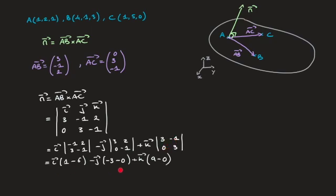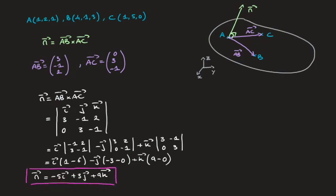Finally, taking care of each of these pairs of parentheses, we can state that a normal vector N to this plane is 1 minus 6 times i, so that's negative 5i, minus negative 3 times j, so that's plus 3j, plus 9 times k, so that's plus 9k. We've just found a normal to the plane containing the three points A, B, and C using the vector product of two vectors. And that's it for this tutorial.